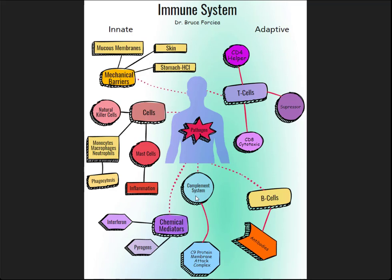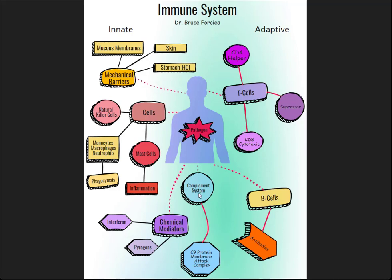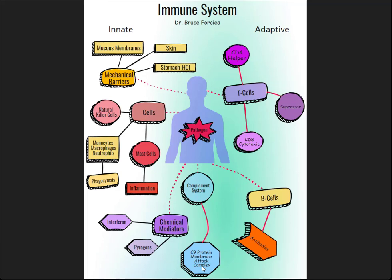There's what's called the classical pathway, which has to do with an antigen-antigen receptor connection. Since there's an antigen involved, it's considered part of adaptive immunity. There's also what's called the alternative pathway — in some cases, some pathogens contain surface chemicals that will directly activate the complement system, so all the complement proteins are then activated.